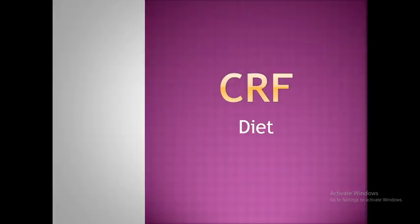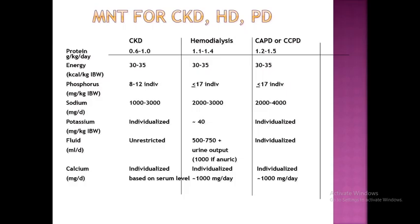Moving to chronic renal failure, also called chronic kidney disease. Pay attention to the table showing energy, protein, and other intakes - especially fluid intake. In chronic kidney disease, fluid intake is unrestricted. In hemodialysis, it is 500 to 750 ml depending on urine output. In peritoneal dialysis, fluid intake is individualized. You can refer to this table for details on minerals and micronutrients in chronic kidney disease, hemodialysis, or peritoneal dialysis.